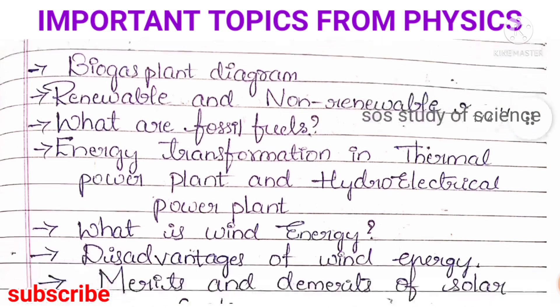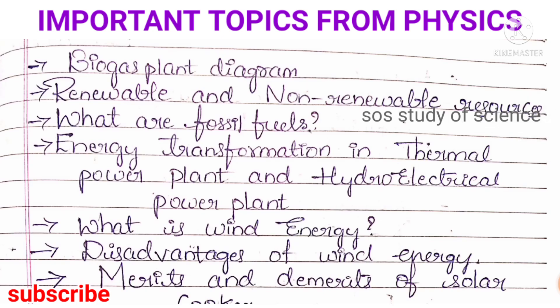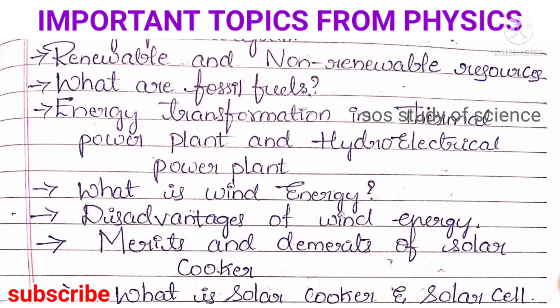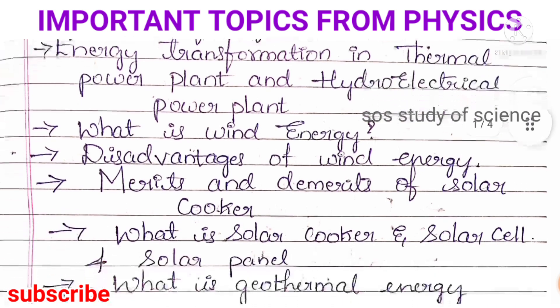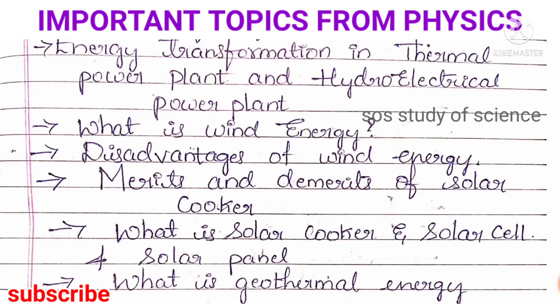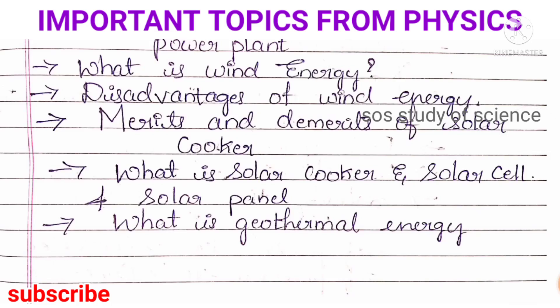Important concepts you need to prepare from Sources of Energy are renewable and non-renewable resources, water, fossil fuels, energy transformation in thermal power plant and hydro electrical power plant. You have to learn what is wind energy, disadvantages of wind energy, merits and demerits of solar cooker, what is a solar cell and solar panel, and what is geothermal energy. Sources of Energy is a very easy lesson — you can easily get three marks from this lesson.